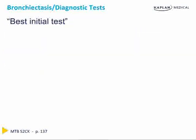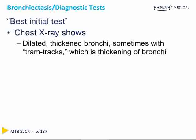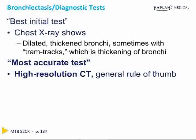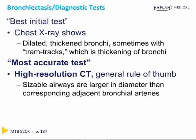USMLE Step 2 likes to ask about the best initial test for a given disorder. In the case of bronchiectasis, this would be a chest X-ray, which shows dilated and thickened bronchi, sometimes with a tram track sign indicative of thickening of the bronchi. However, the most accurate test for bronchiectasis would be a high-resolution chest CT. The general rule of thumb is that airways consistent with bronchiectasis are going to be larger in diameter than their corresponding adjacent bronchial arteries.